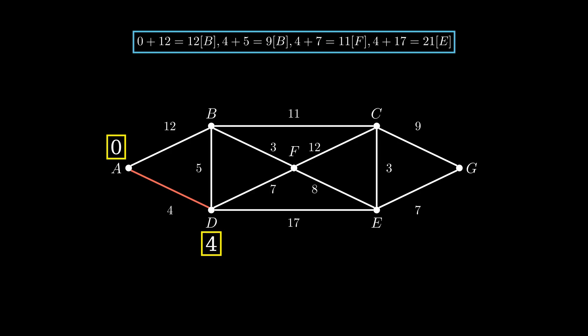12 because of the line A to B. Everywhere it says 4 plus is from point D, since the value of D is 4. And the smallest value that comes out of all of these is when we go from point D to point B, which is 4 plus 5 equals 9. Now B gets the value 9, since we ended off there.